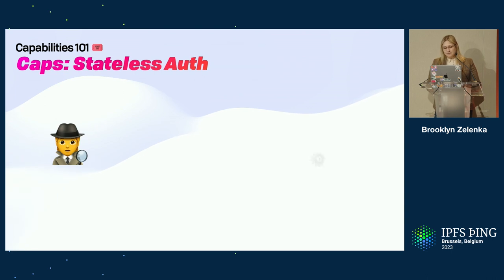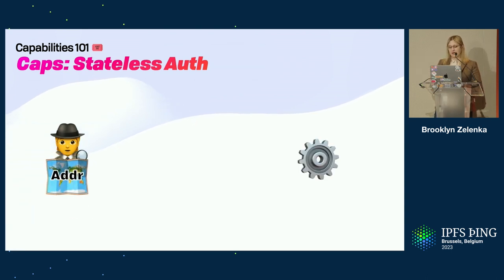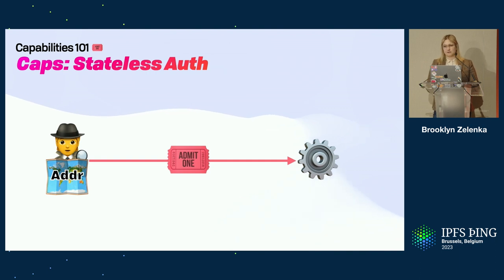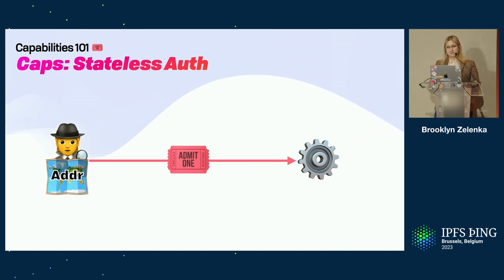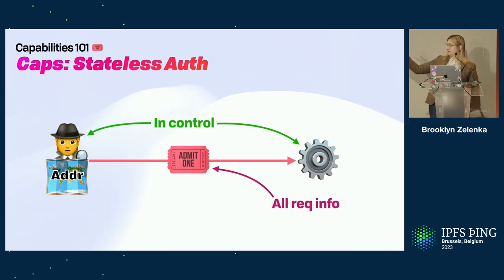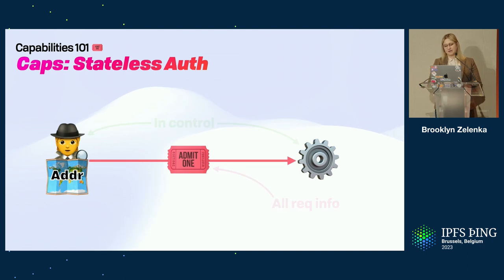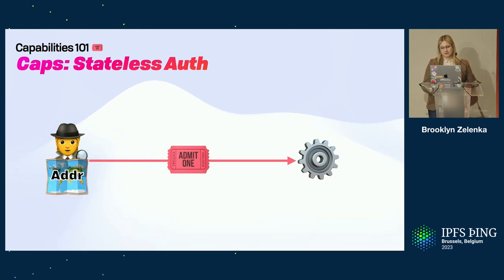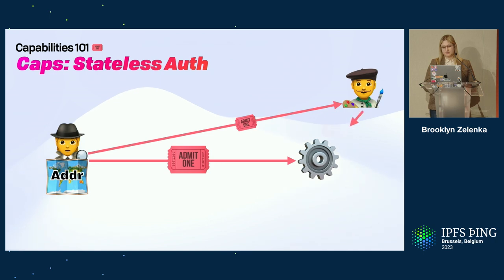Capabilities have a slightly different picture. Here's the user, here's the service they want to access, and the user has some address — some pointer to the thing — and a cryptographic token that says they're allowed to access it. Instead of being like a bouncer in front of a club, it's like having a ticket to the movie theater. When I go to the movies, they don't check my ID — they check I have a ticket. If I can't make it, I can give my ticket to Steven and he can go see the movie instead. This puts the user and the service in control. All the required info sits inside the token — it's stateless. I can make copies of the capability and hand them out, and I can attenuate them.